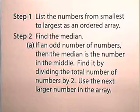A, if there are an odd number of numbers, then the median is the number in the middle. Find it by dividing the total number of numbers by two and use the next larger number in the array.